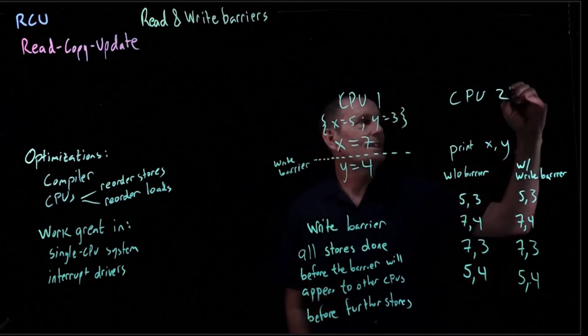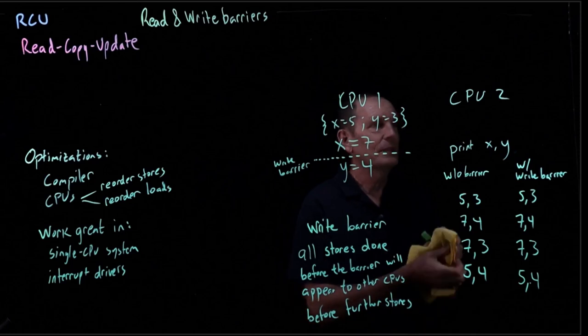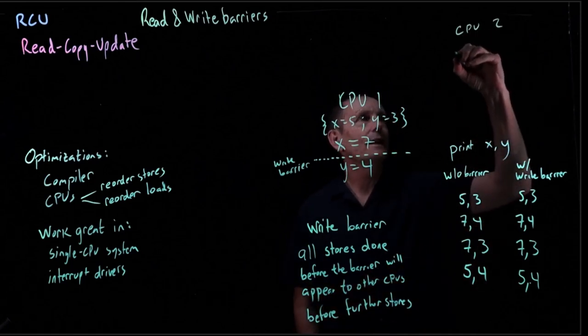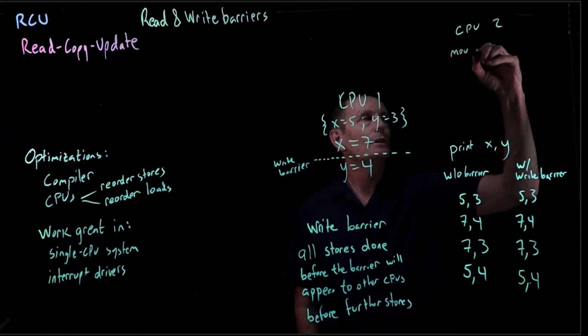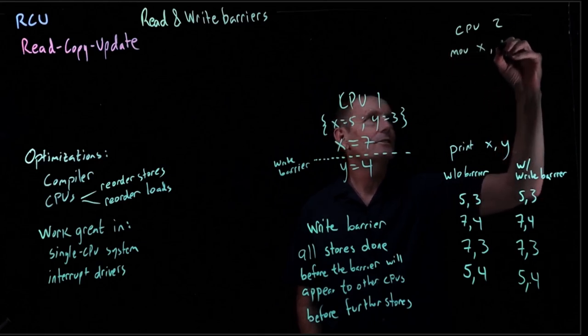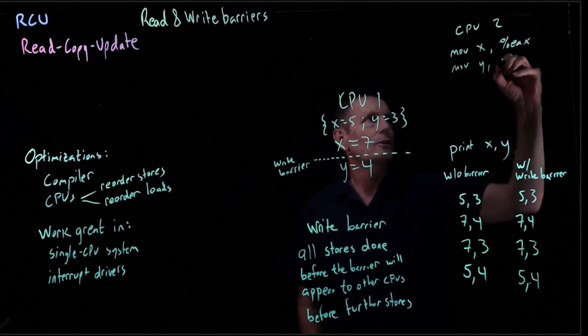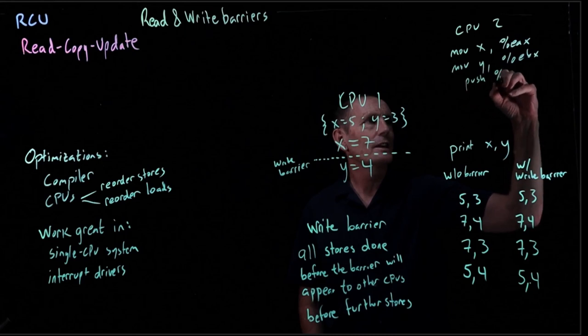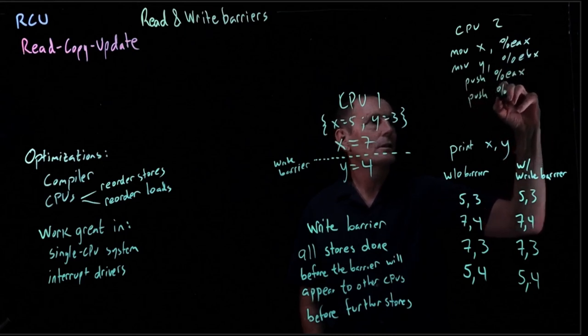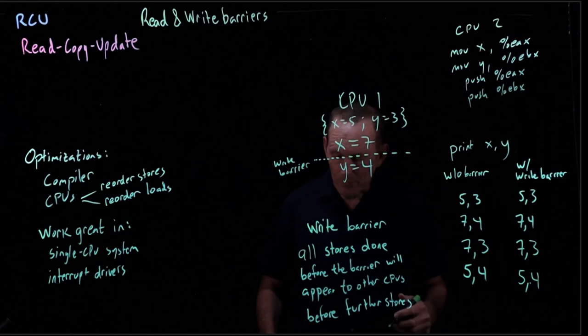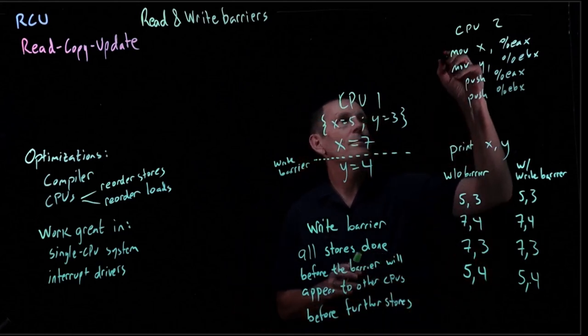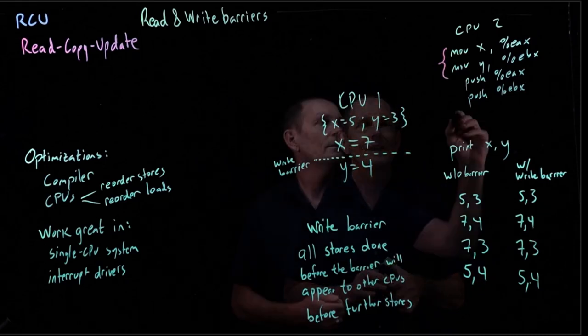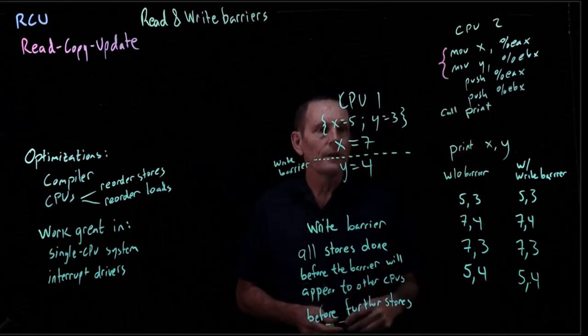So although x86 doesn't do this reordering of stores, it will do the reordering of loads. So in CPU, what can basically happen is we have something like move x into eax, move y into ebx, push eax, ebx. And the problem is that these two may come out of order.